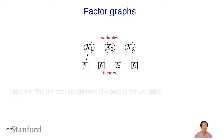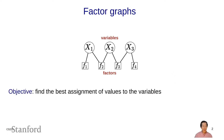For example, f2 specifies how x1 and x2 are related, f3 specifies how x2 and x3 are related, and f4 specifies how x3 should be related. The objective of a constraint satisfaction problem is to find the best assignment of values to the variables — we'll define what 'best' means in a moment.